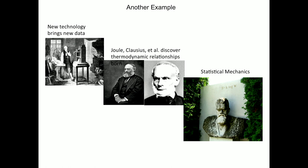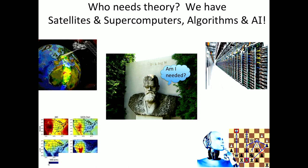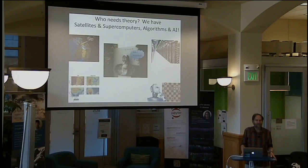Today we have really big data — supercomputers, satellites, algorithms and artificial intelligence, machine learning, chess programs that can beat any grandmaster. And so you might ask, who needs Boltzmann? We can just use the data and figure out what it means and draw conclusions without having to mess around with theory. Well, I strongly object to that viewpoint, and I'm going to try to convince you that it's a wrong way to think about the future of science.